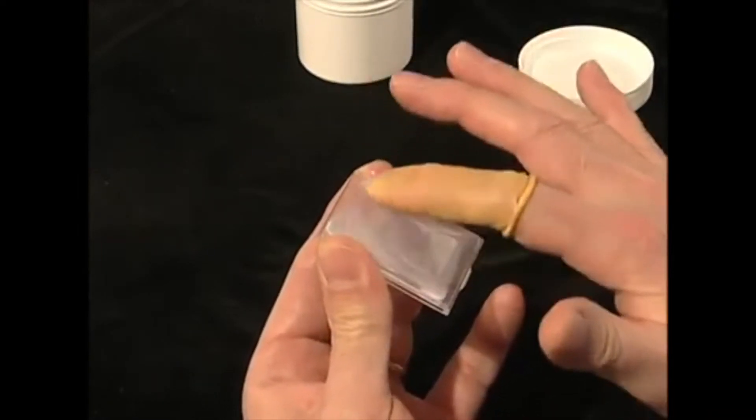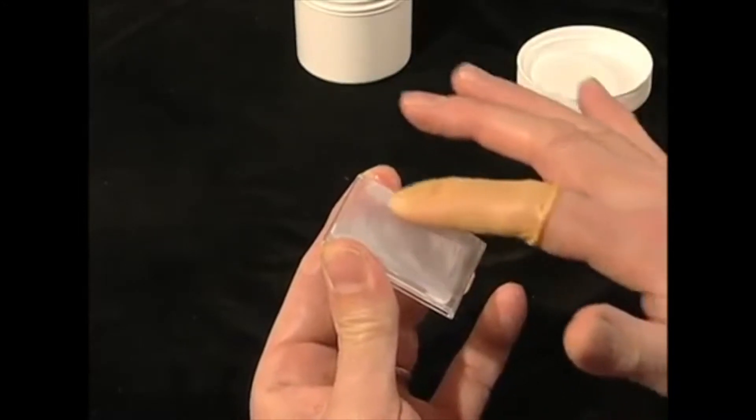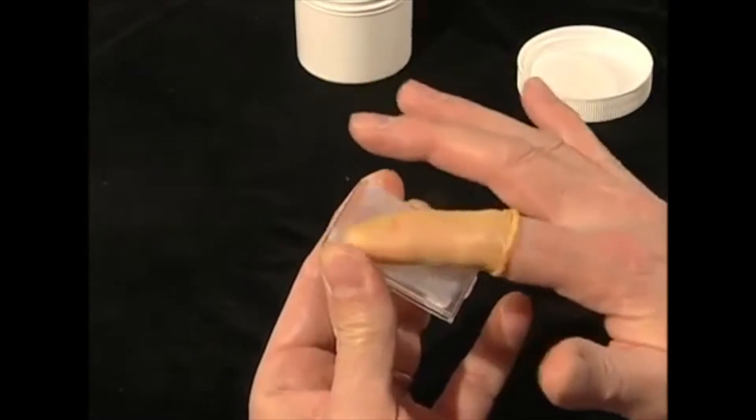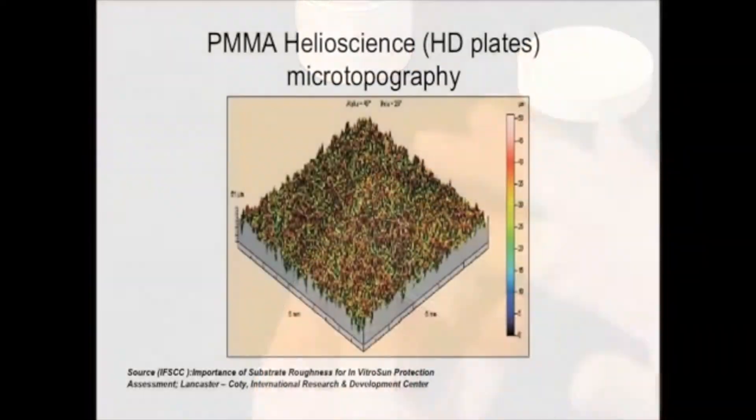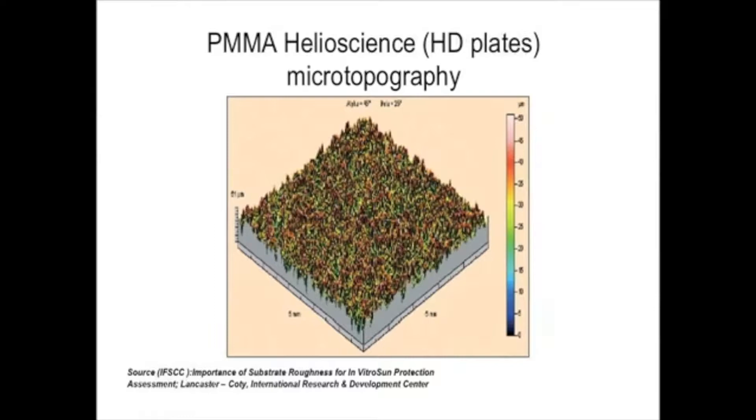Gaps or holes should not be present on the sunscreen film as these will adversely affect the measurement accuracy. The surface topography of the HD plates can be seen here, showing the pronounced peaks and valleys of the plates.